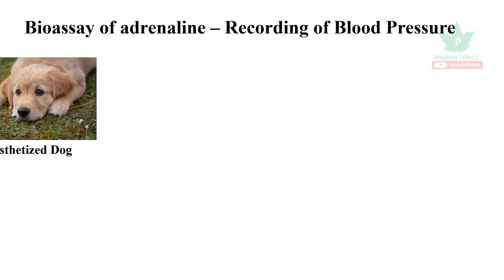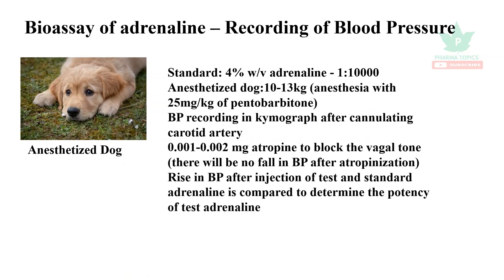For the recording of blood pressure in the dog, an anesthetized dog is used. A standard 4% w/v, 1-in-10 dilution of adrenaline is used. The dog is anesthetized with 25 mg/kg of pentobarbitone; 10 to 13 kilogram dogs are used. BP recording is done after cannulation of the carotid artery.